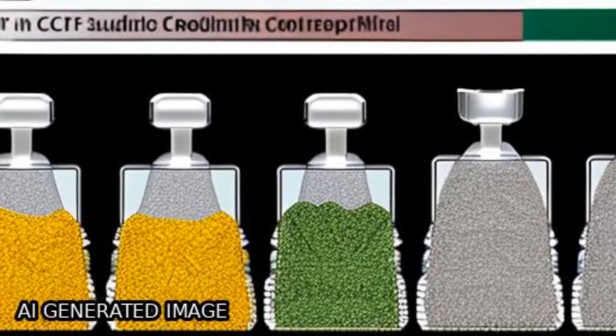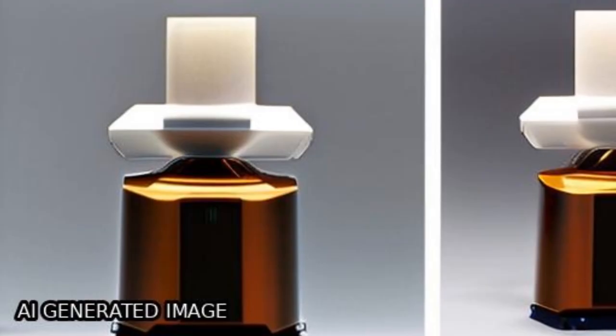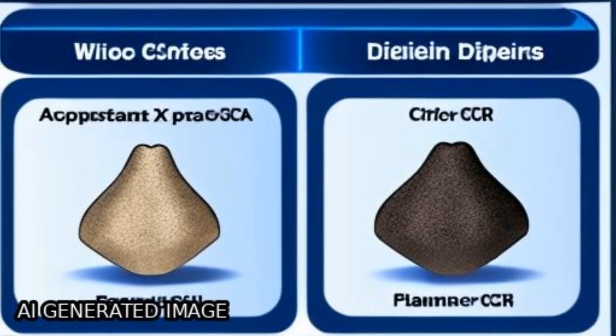The erosion mechanisms of Cr18Ni9Ti stainless steel are mainly cutting and plastic deformation at low angle and high angle, respectively.